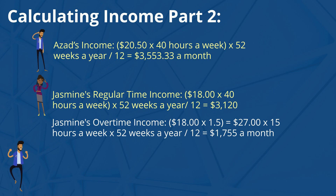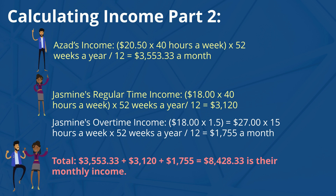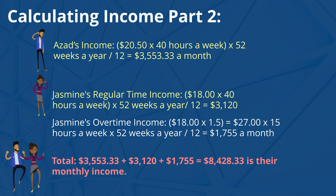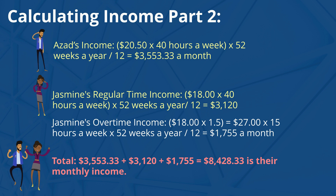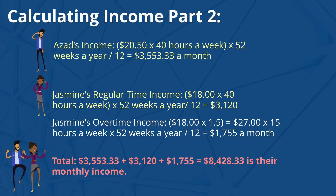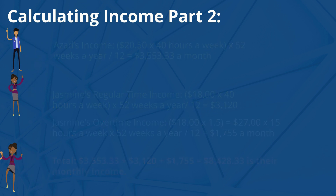Now let's add all of them together. Asad's income of $3,553.33 a month, plus Jasmine's regular time income of $3,120, plus her overtime income of $1,755, is equal to $8,428.33 a month.